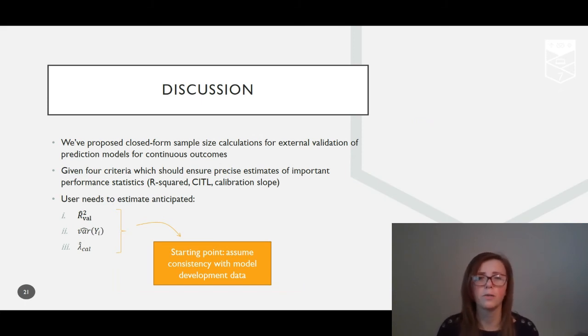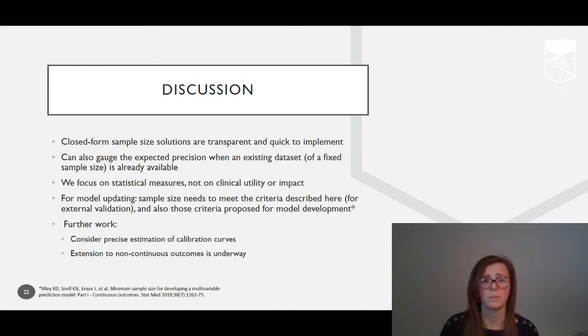In conclusion, we've proposed closed-form sample size solutions for studies externally validating a prediction model with a continuous outcome. These aim to ensure the sample size is large enough to precisely estimate key measures of predictive performance and their residual variances of the calibration models. As I've demonstrated, implementation of these closed-form sample size solutions is quick and transparent. You can also use these same calculations with some rearranging to gauge the expected precision when an existing dataset of fixed sample size is already available for use. Further work includes extension to non-continuous outcomes, and Kim Snell is presenting this work in a poster here at MEMTAB 2020.